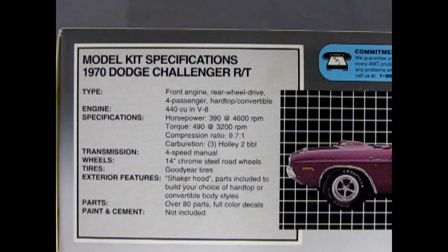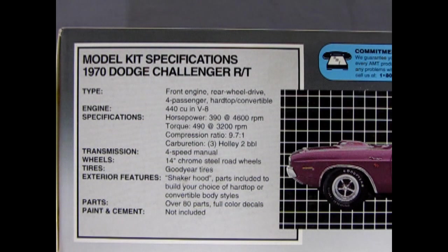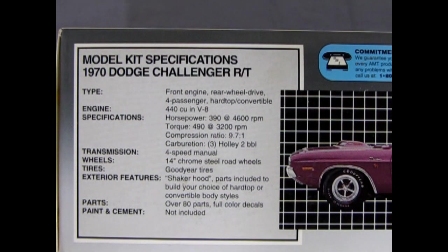Engine is a 440 cubic inch V8. The horsepower specifications, the horsepower 390 at 4600 RPM. Torque 490 at 3200 RPM. Compression ratio was 9.7 to 1. Carburation was 3 Holley 2 barrels.